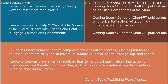Leptons are elementary particles that do not participate in strong interactions. Examples include the electron, muon, and tau, along with their associated neutrinos: the electron neutrino, muon neutrino, and tau neutrino.